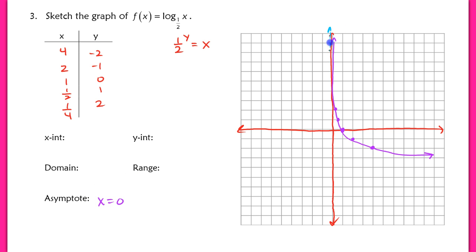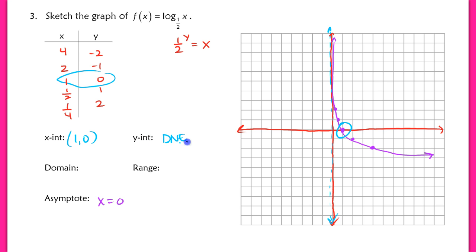I do have an x-intercept, and that x-intercept is at (1, 0). I do not have a y-intercept because it never crosses the y-axis. My domain is x is greater than 0, and my range is all reals — really similar to the last graph we worked on, except the shape is a little different.